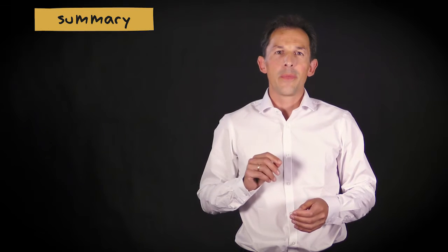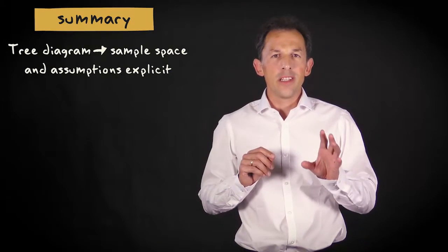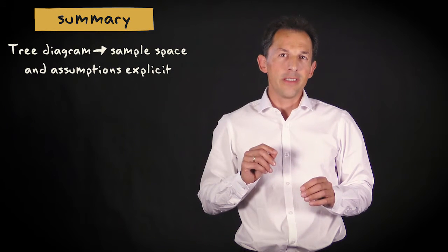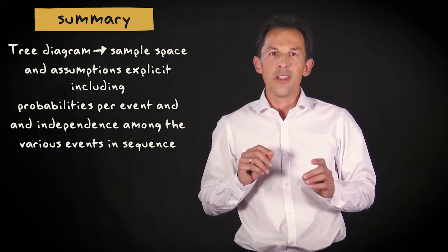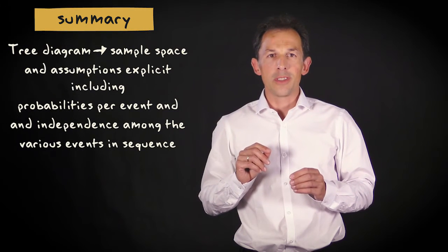Let me summarize what I explained in this video. In a tree diagram, you make the sample space and the assumptions about various events explicit, including the probabilities per event and independence among the various events in sequence.